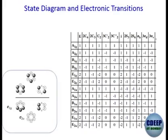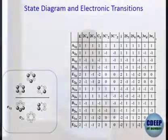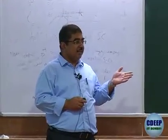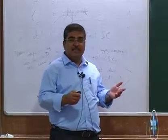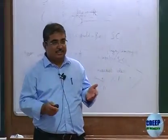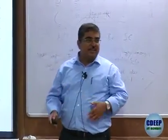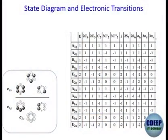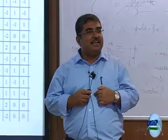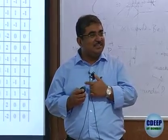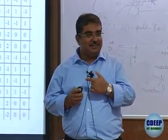Similarly, the next pair works out to E2U, and the highest energy MO is B2G — I leave those for you to verify. The character table makes our lives much easier, and you can use it to determine these symmetries without computing the full matrix every time.